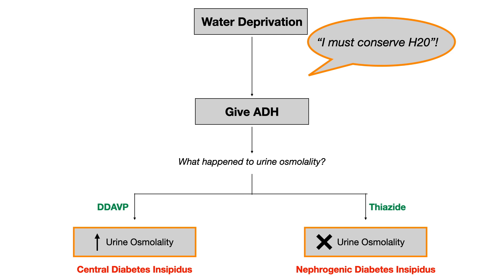Big picture: know the difference between SIADH and diabetes insipidus. Within diabetes insipidus, know the difference between central and nephrogenic, how to differentiate them using the water deprivation test, and understand the treatment — DDAVP for central, thiazides for nephrogenic. And last, know what to expect with urine osmolality, serum osmolality, and sodium in all of these diseases. That is everything you need to know.